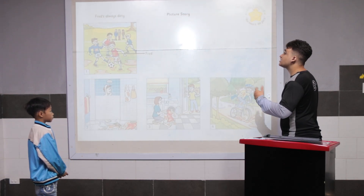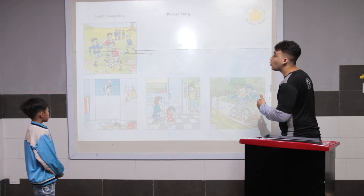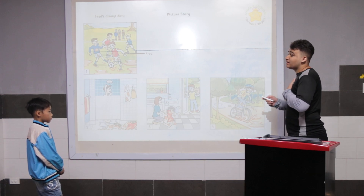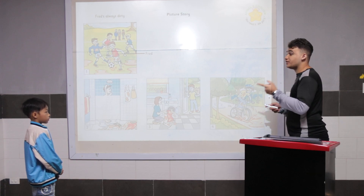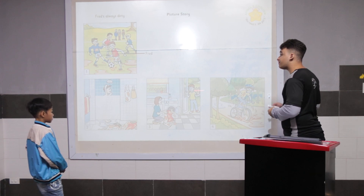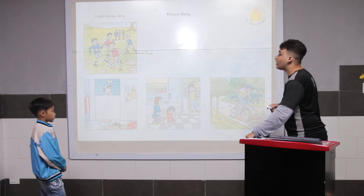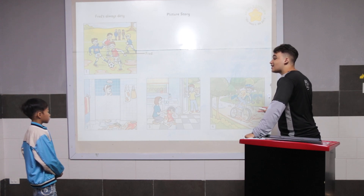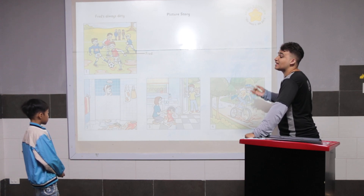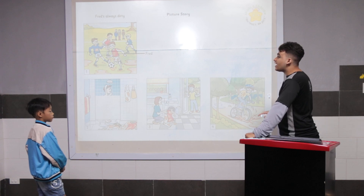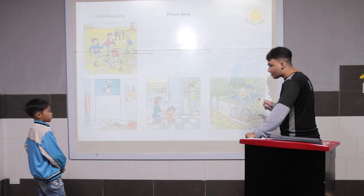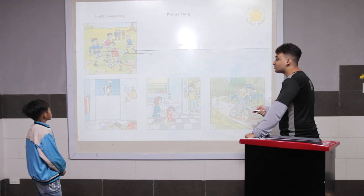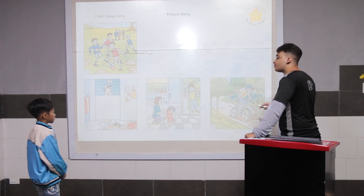Good. So, this story is called Friends Always Dirty. I will explain picture one. You explain pictures two, three, and four. So, in picture one, friends playing soccer and having lots and lots of fun, but he's very, very dirty. Can you explain two, three, and four, please?